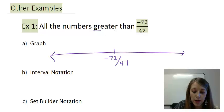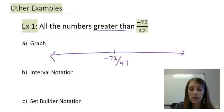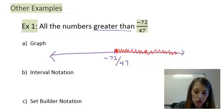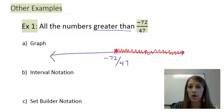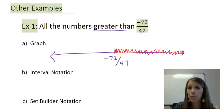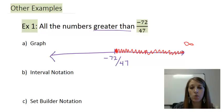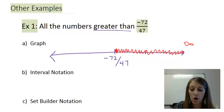Since this is greater than, I'm going to represent all the numbers on the number line that are bigger than this number. I'm going to shade all the way to the right — all the way to the right arrow. The right arrow represents going to positive infinity. Just make sure you shade all the way to the arrow.